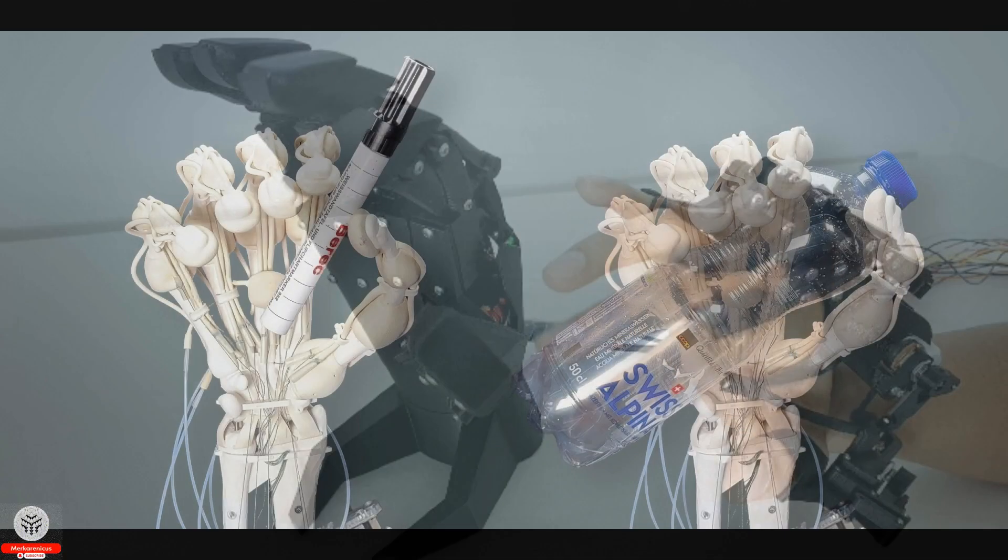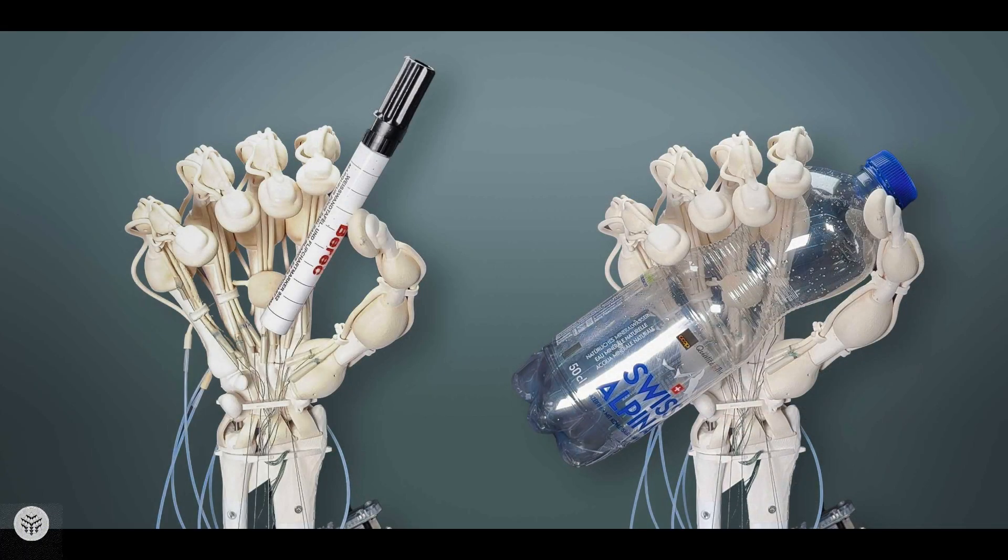Robots that are printed possess the same physical components as humans, including bones, ligaments and tendons.